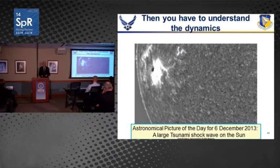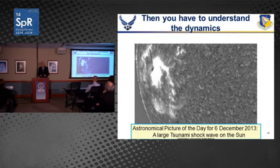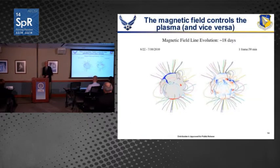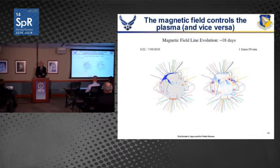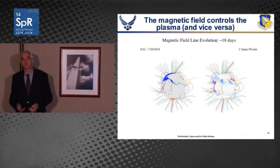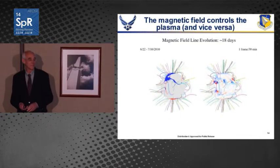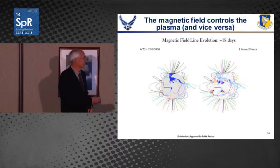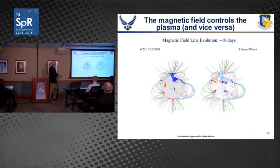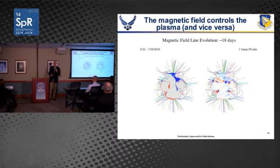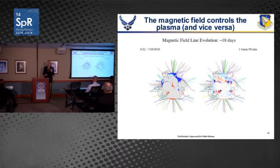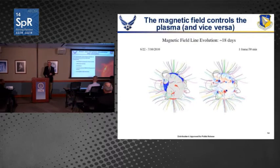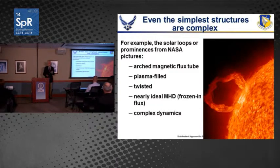You also have to understand the dynamics of the sun. Recent data from this past year shows a tsunami-type event launched across the face of the sun when a flare fires. You have to understand the large-scale magnetic fields as well, which is a really complex problem. This magnetic field model by John Linker shows the fields on the sun, including dark-shaded regions of open field lines where solar energetic particles have access to the solar wind and can reach the Earth, causing problems with electronics in orbit.